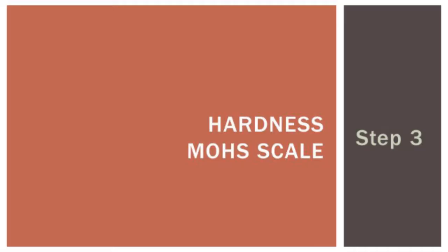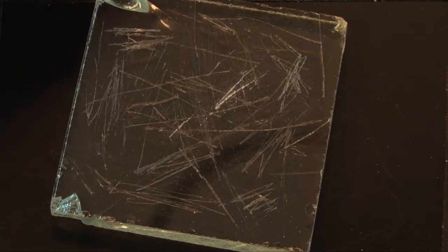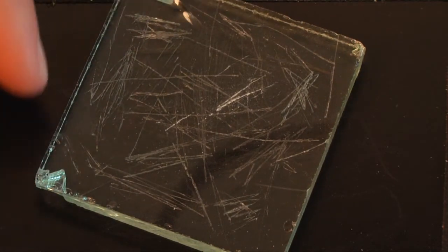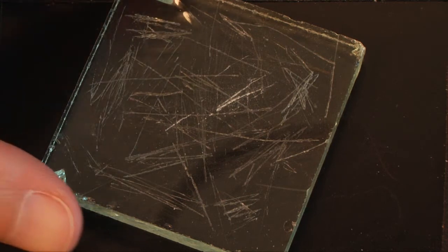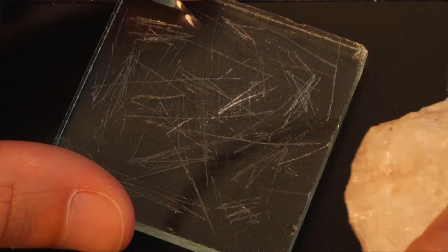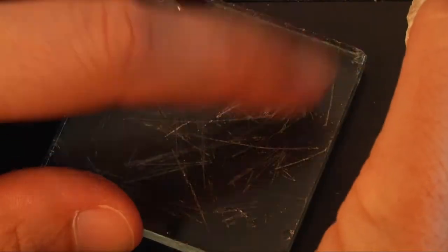The next property that you'll test for is hardness. And you'll use a glass plate like the one you see here. You can see there's lots of scratches on here. So you'll place it flat on the table, hold it with a few hands, and then take your mineral and try to scratch the glass with it. And then you'll see that you scratched the glass, so harder than glass.